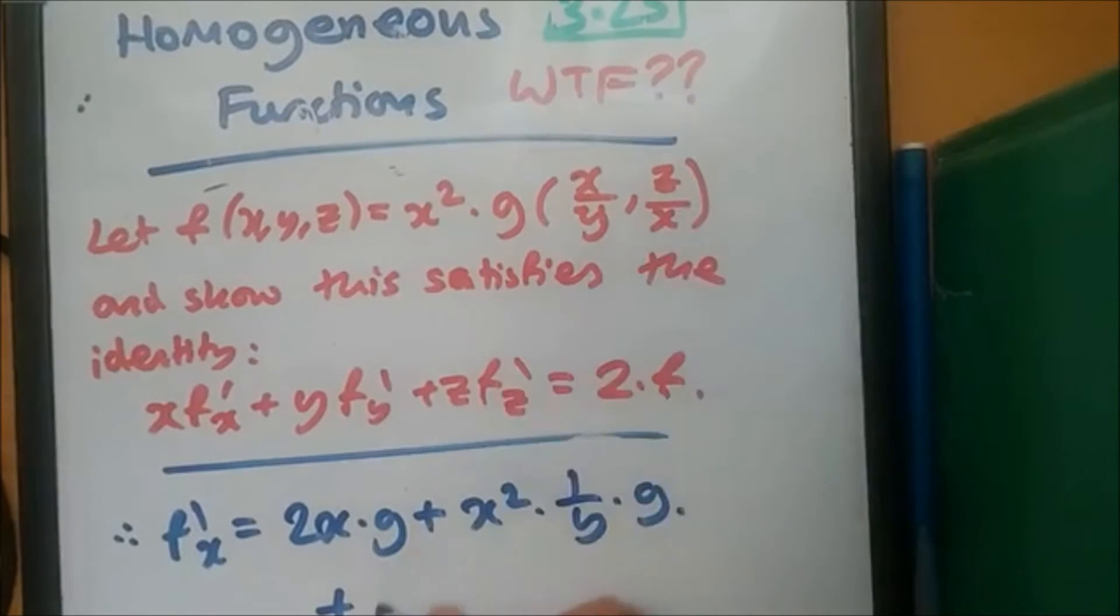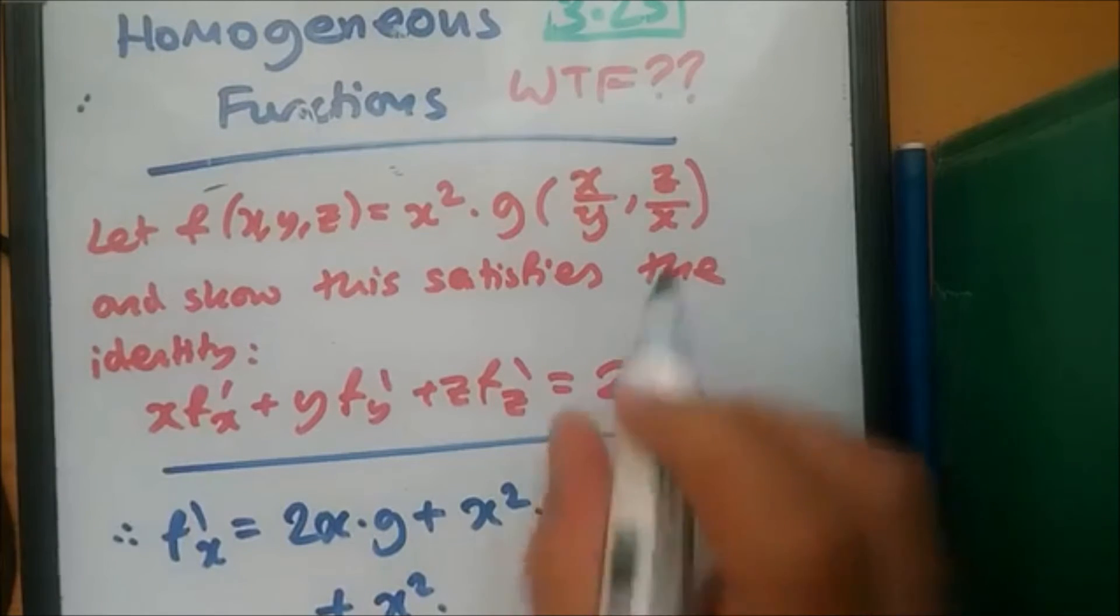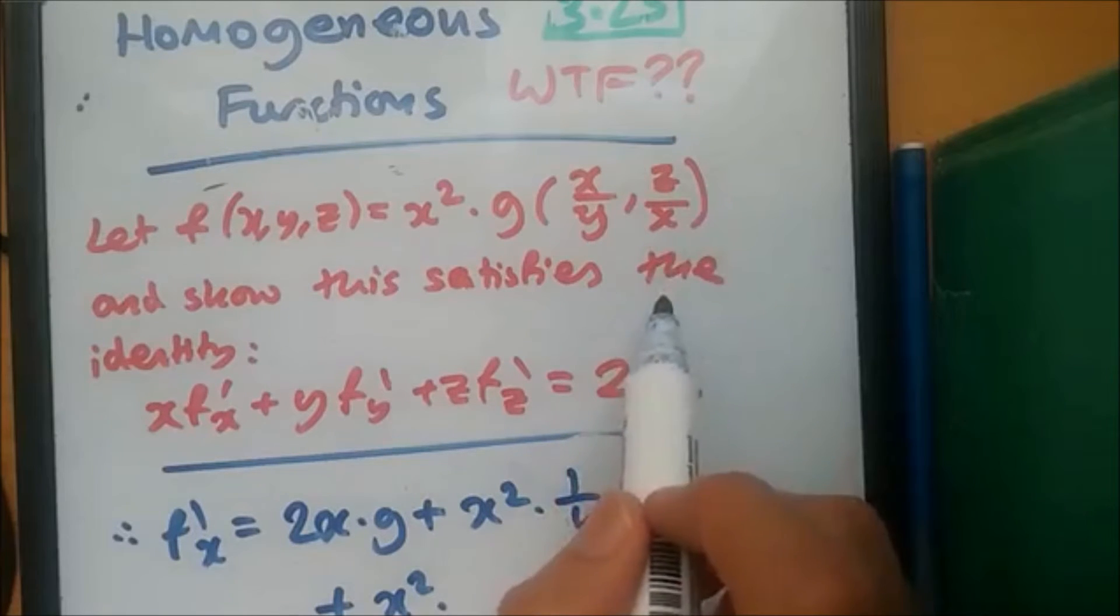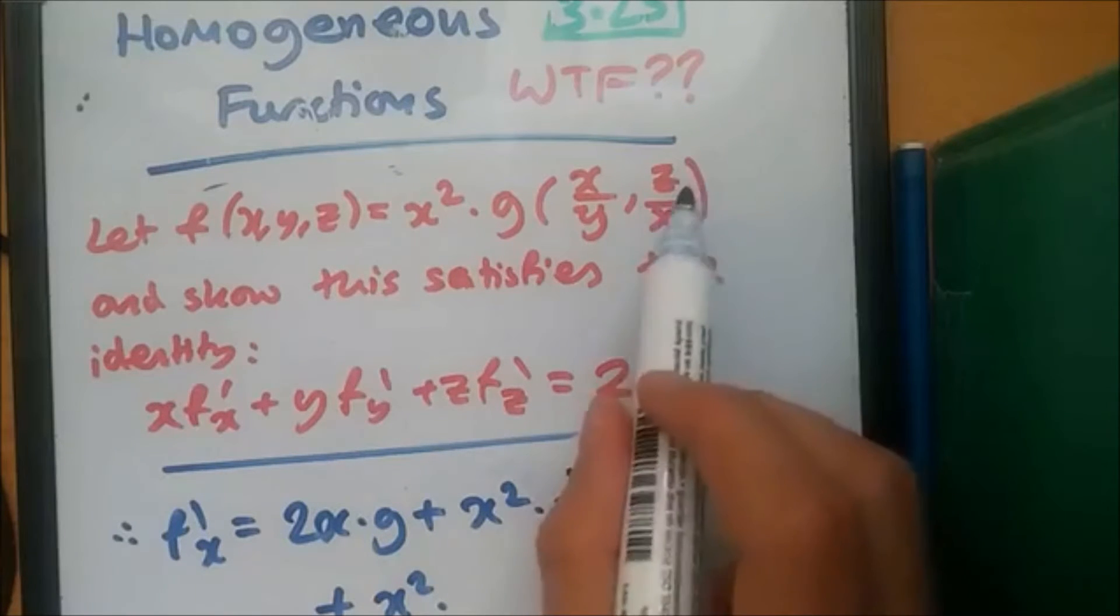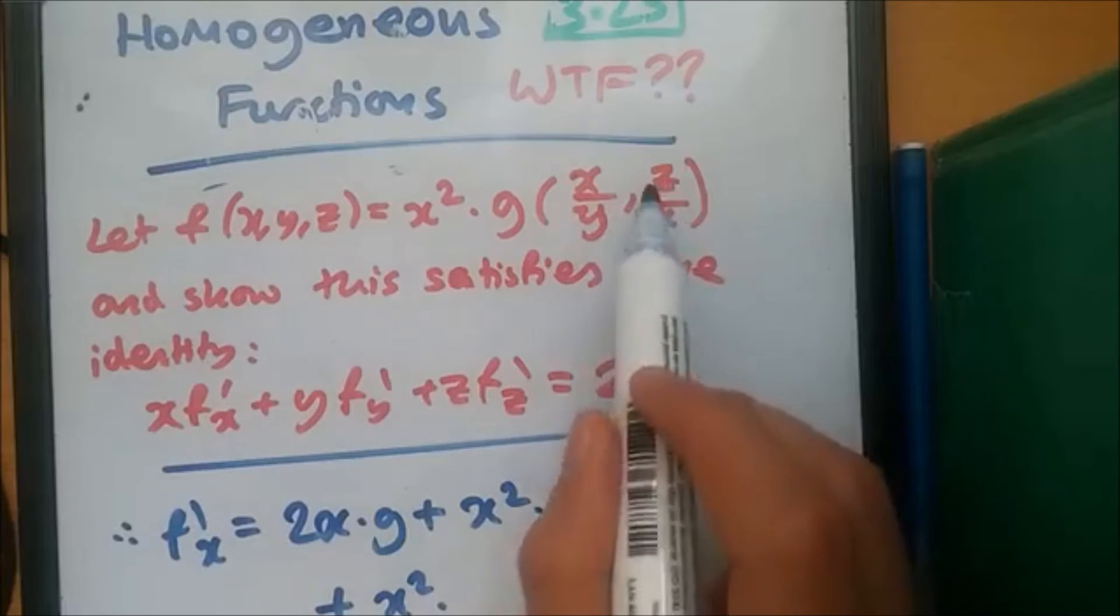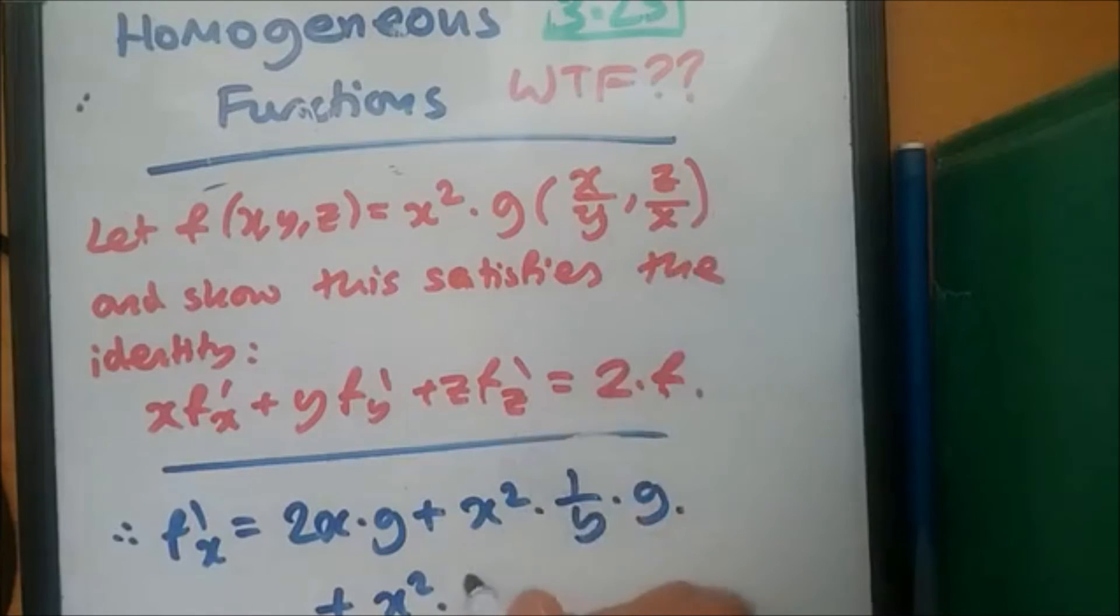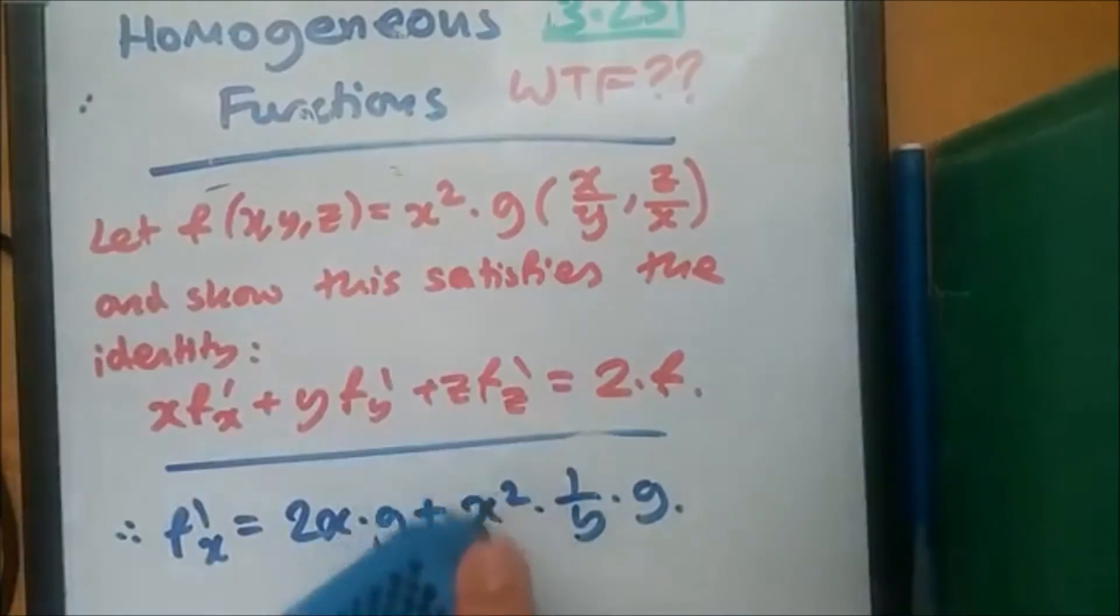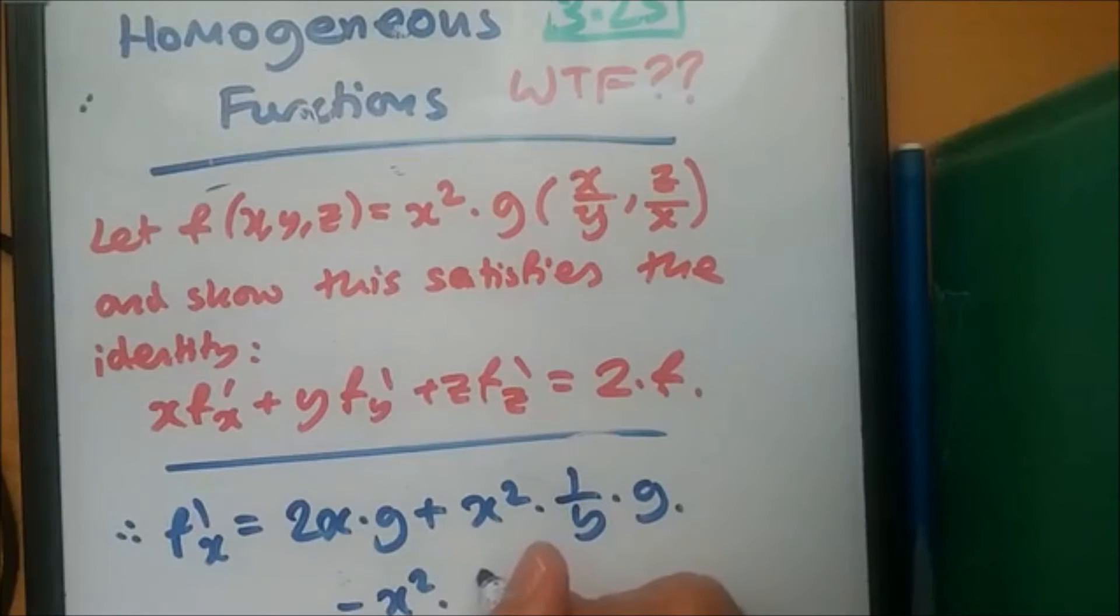Plus, now again, x squared times, and so we're going to differentiate the second part of the g function, z over x. So z is a constant. The derivative of 1 over x is minus 1 over x squared. And we just pop in the z too. So we flip the sign here to a negative minus z over x squared.